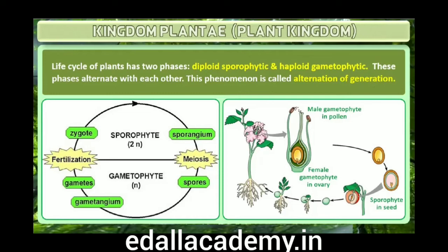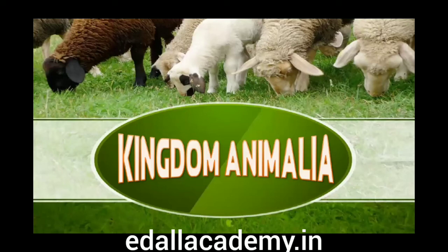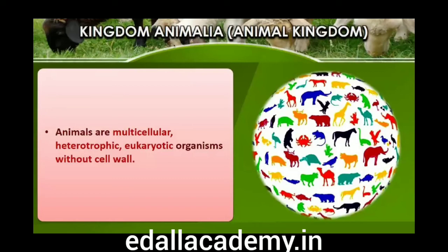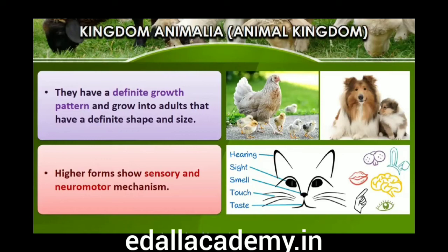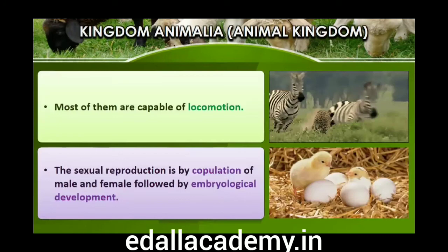2.5 Kingdom Animalia. This kingdom is characterized by heterotrophic eukaryotic organisms that are multicellular and whose cells lack cell walls. They directly or indirectly depend on plants for food. They digest their food in an internal cavity and store food reserves as glycogen or fat. Their mode of nutrition is holozoic — by ingestion of food. They follow a definite growth pattern and grow into adults that have a definite shape and size. Higher forms show elaborate sensory and neuromotor mechanisms. Most of them are capable of locomotion. Sexual reproduction is by copulation of male and female followed by embryological development.